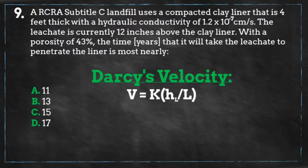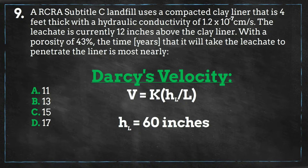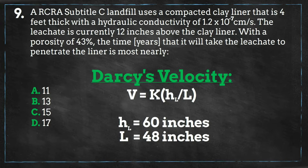Next, let's figure out what our hydraulic gradient is — it is the head loss divided by the length of the medium of flow. The head loss in this problem is the distance between where the leachate currently is and where it's going. It's 12 inches above the liner, and since we're looking at how long it takes to get through the liner, we add this to the thickness of the liner, which is 4 feet or 48 inches, giving us 60 inches as our head loss. L is the length of flow through the medium, which is the clay liner at 48 inches. Some make the mistake of using the total length of flow instead of only the flow through the medium, but remember that this is already accounted for in the head loss portion of the equation.